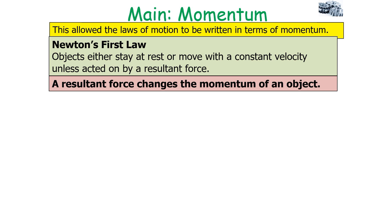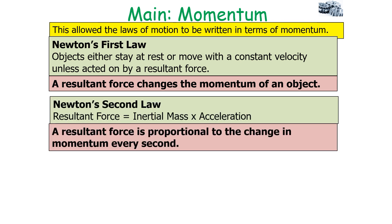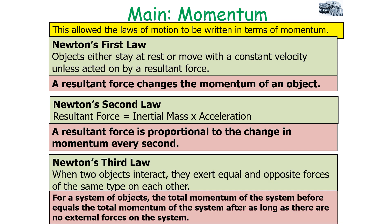Newton's first law — objects stay at rest or move with constant velocity unless acted upon by a resultant force — can be written as: a resultant force changes the momentum of an object. Newton's second law, F = ma, can be written as: resultant force is proportional to the rate of change of momentum. Newton's third law — equal and opposite forces — can be written as: for a system of objects, total momentum before equals total momentum after, provided there are no external forces. That is the conservation of momentum.